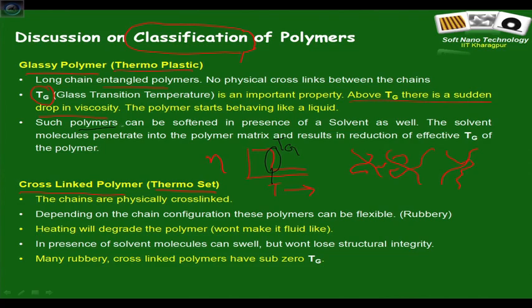Such glassy polymers can also be softened in the presence of a solvent — solvent molecules penetrate into the polymer matrix and reduce the effective Tg. In many soft lithography techniques we will be talking about patterning these glassy polymers, taking advantage of the glass transition temperature — the polymers are heated beyond Tg, patterning is done, and then they are cooled or removed from the solvent chamber to enhance their viscosity, giving structures that are stable at room temperature.